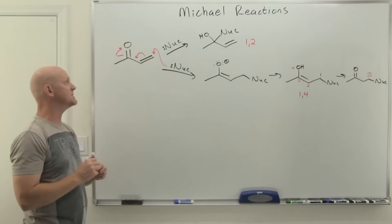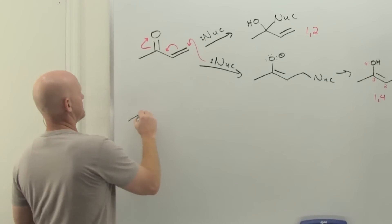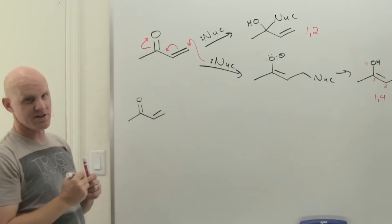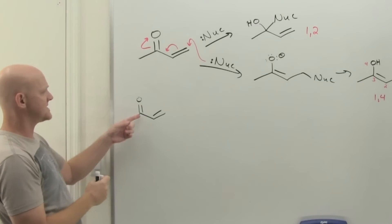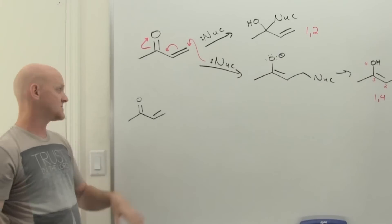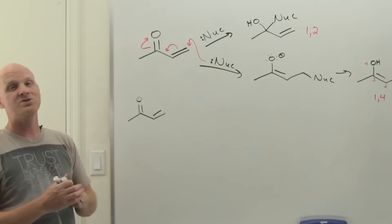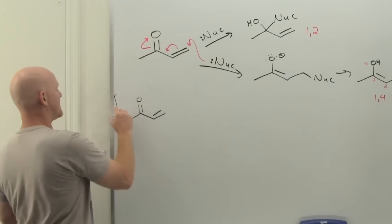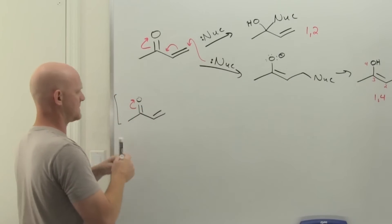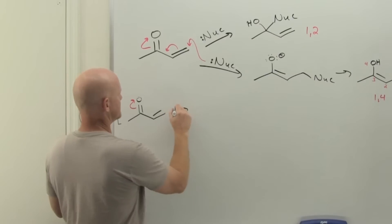We got to talk about why one-four addition is even possible. We know that one-two addition is possible—that carbon-oxygen double bond is just really polar, so that carbon is very partially positive. But you could also demonstrate that by resonance here, so let's push these electrons up.